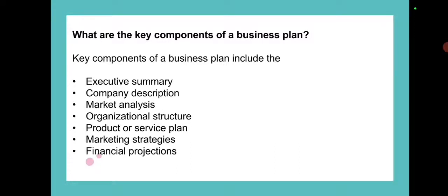Next question: what are the key components of a business plan? The key components are: executive summary, company description, market analysis, organizational structure, product or service plan, marketing strategies, and financial projections. The executive summary is basically a short overview of the business, including the business idea and goals.